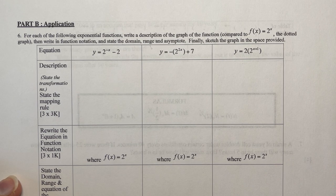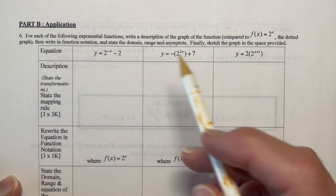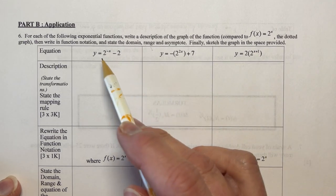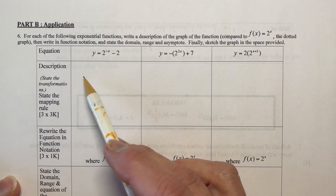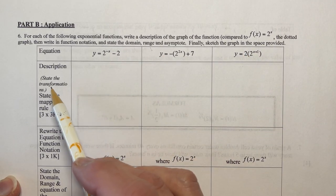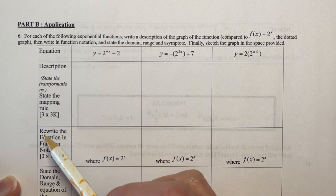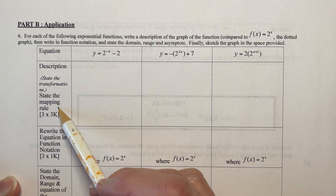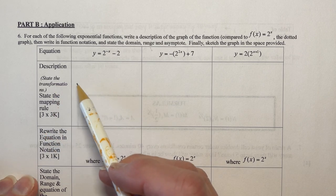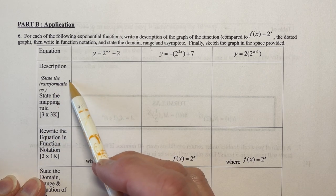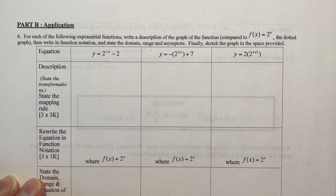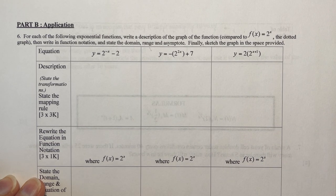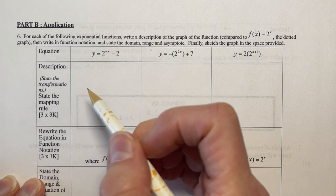You're dealing with three different graphs here. You need to give the equations for the functions, and you're asked to give a description — which means state the transformations and state the mapping rule. Let's do them one at a time so it comes back to kind of repeat.